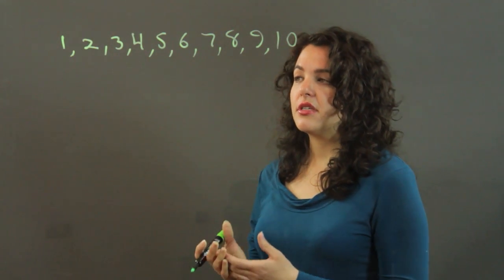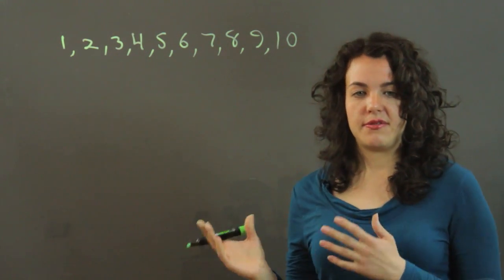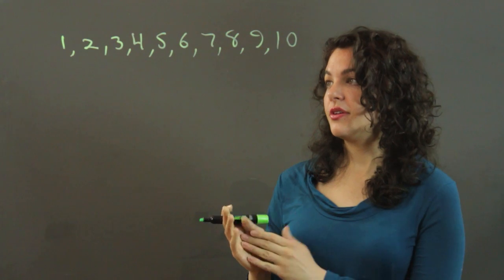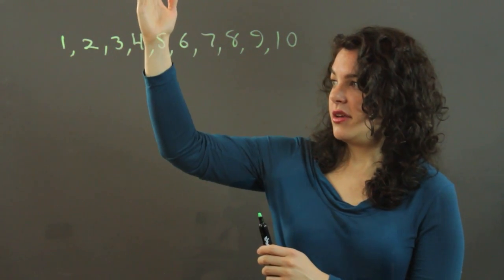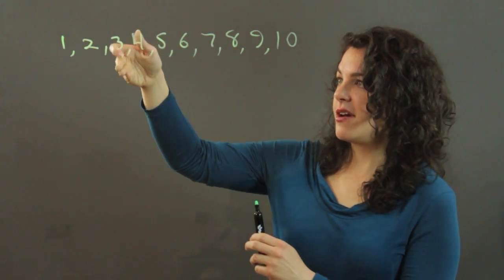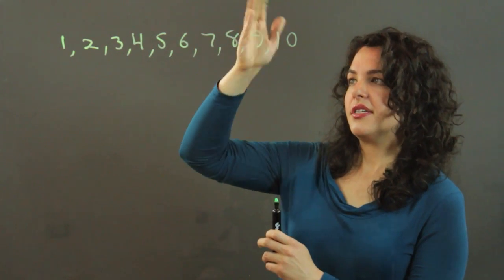Now, the quartiles are numbers that will divide this set of numbers into four parts. So you're going to have three quartiles, one in the middle, and then the lower quartile divides the first half and the upper quartile divides the second half.